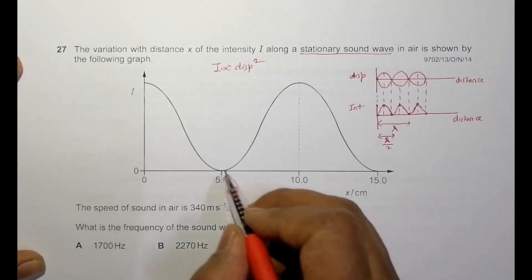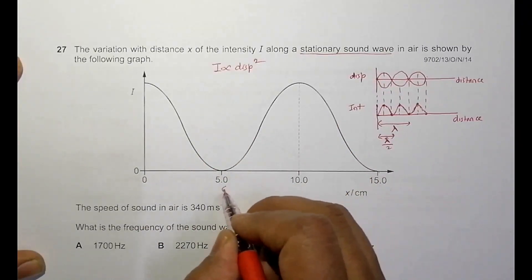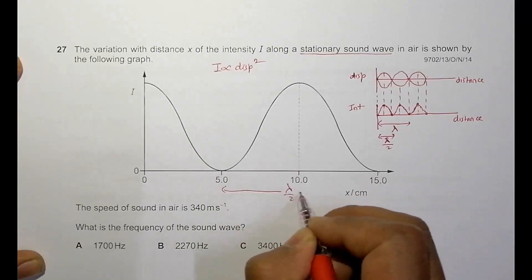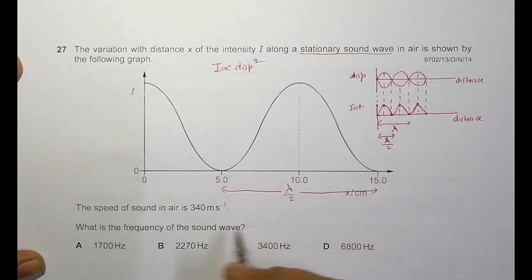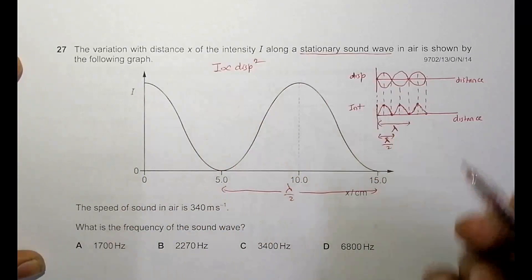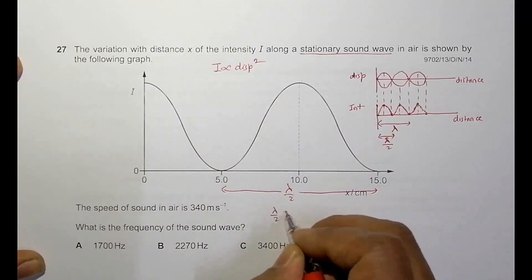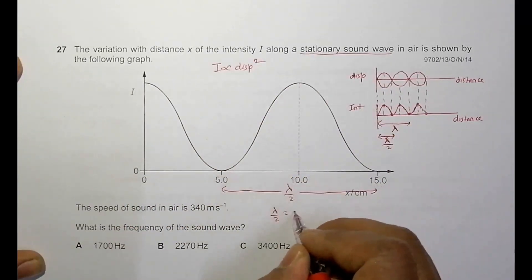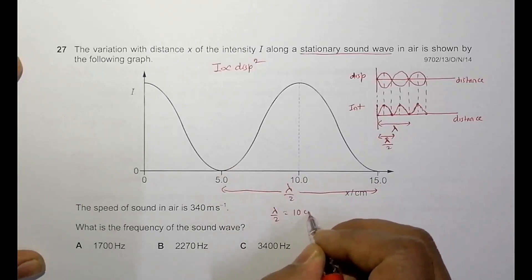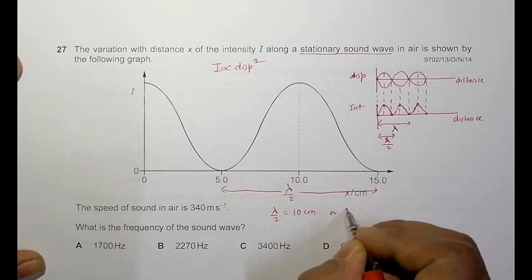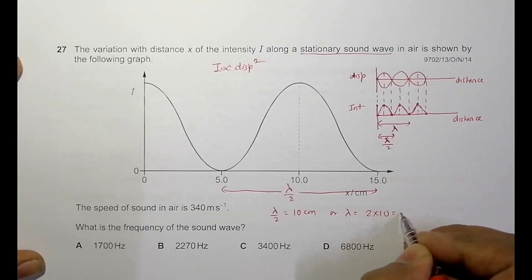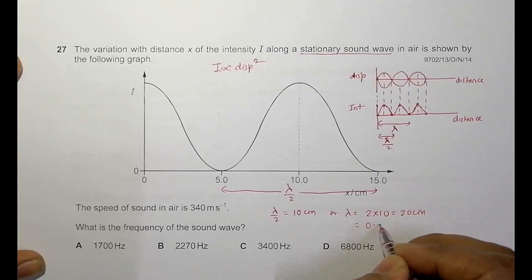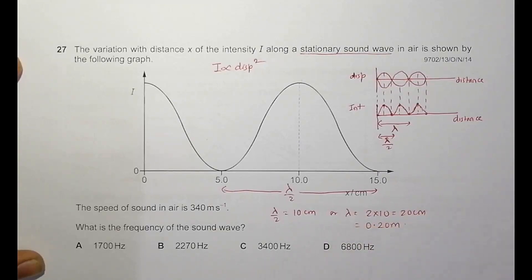Coming back to the graph, the distance from one zero (minimum) point to the next zero (minimum) point is equal to lambda by 2. That distance is 15 minus 5, which is 10 centimeters. So lambda by 2 equals 10 centimeters, which means lambda equals 2 times 10, equal to 20 centimeters, or 0.20 meters.